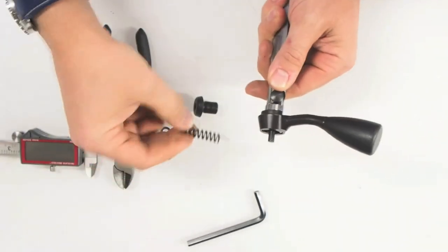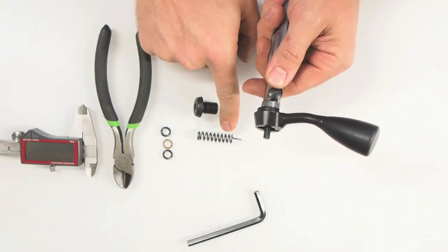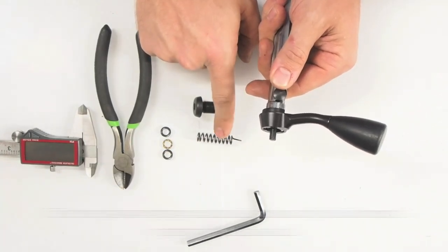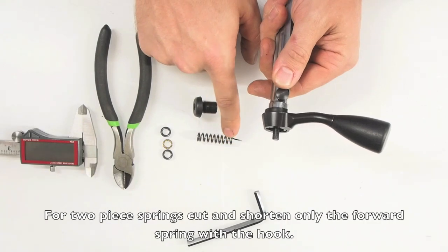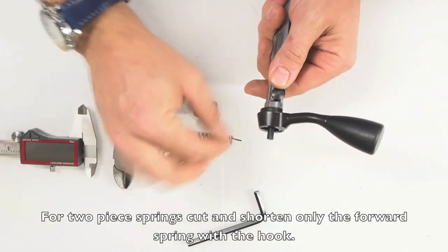Then we're going to pull out the spring. Now, as you can see, this one is a one-piece spring. Many Savage Axis rifles, the spring is actually two pieces with a little ring in between. That little ring will go in the trash.